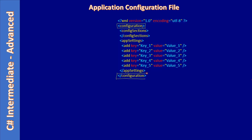If you see, the configuration starts with the configuration tag — that's the root node — and here is the ending node for the configuration. This configuration is a combination of a config section, but here we are not using any config section. We have sample entries for app settings, which denotes application-related settings.